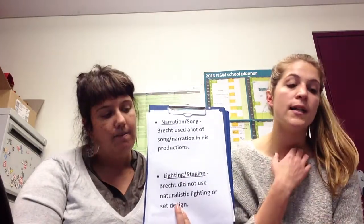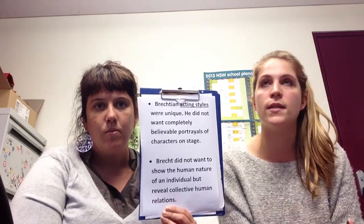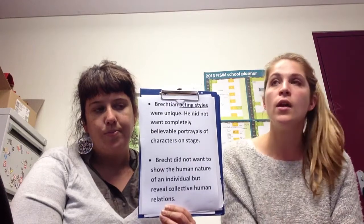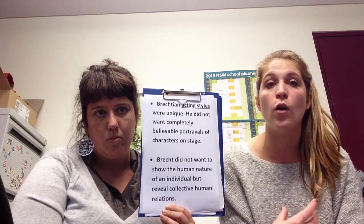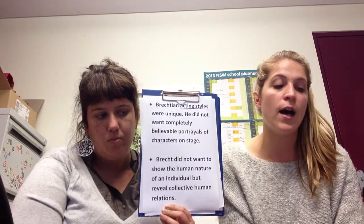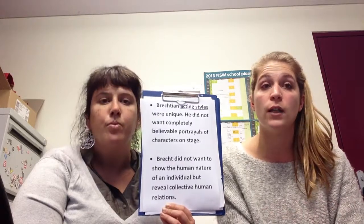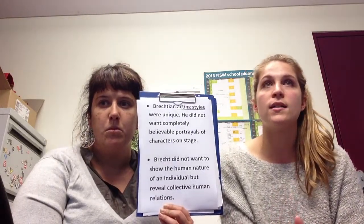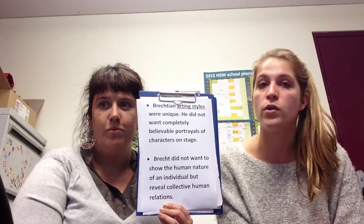Regarding acting style in Brechtian theatre — it was very much in line with that idea of breaking down the barrier between the audience and the performer. Brecht came after the period of melodrama, so he wasn't into over-the-top characters that were overly dramatic and asked their audience to become emotionally involved. He didn't want completely believable portrayals of characters. Brecht believed that if the audience developed an emotional attachment to the character, they couldn't evaluate the social realities of the play. So he wanted to keep acting styles very simple and understated, in order to have his audience reflect impartially upon what was going on on stage.